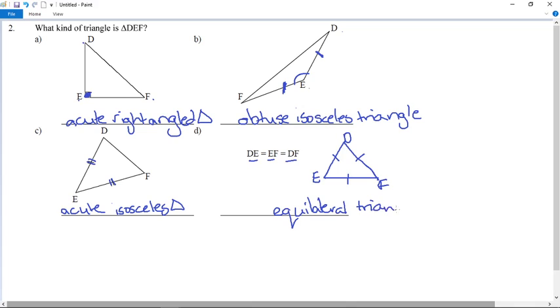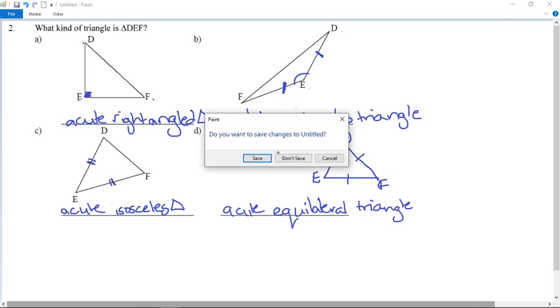But this equilateral triangle, it is also an acute equilateral triangle. You actually can't get an obtuse equilateral triangle, but there we go. So let's move on to the next question.